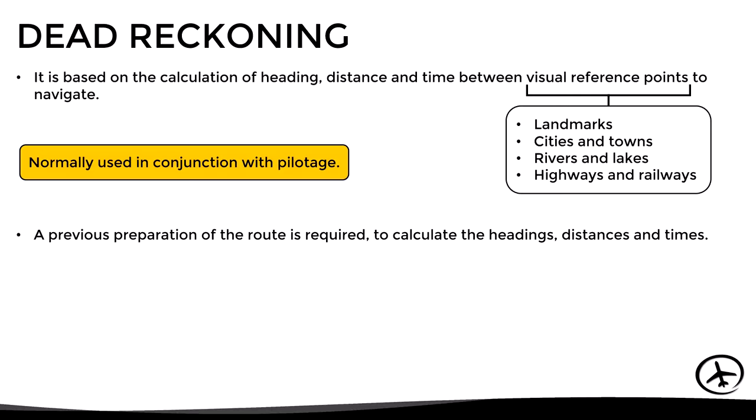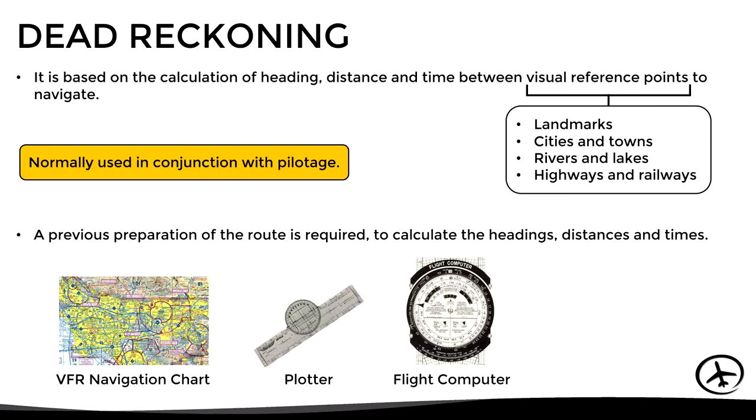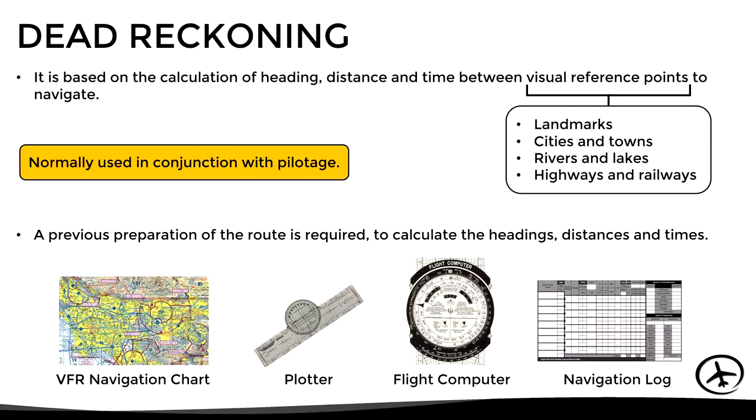In order to apply dead reckoning, a preflight preparation of the route is necessary to calculate the headings, distances, and times. To do this, the pilot normally uses a VFR navigation chart of the area, a plotter, a flight computer, and a navigation log to manually calculate all the necessary information. Nowadays there are mobile applications that perform these calculations automatically.